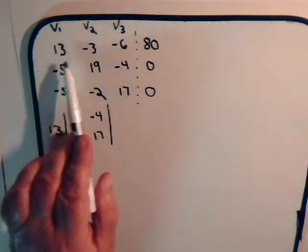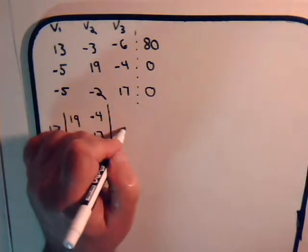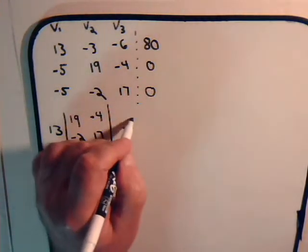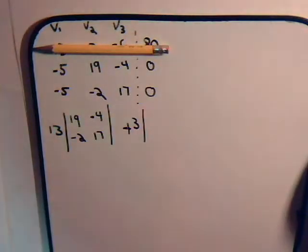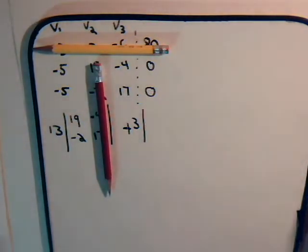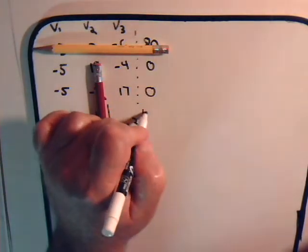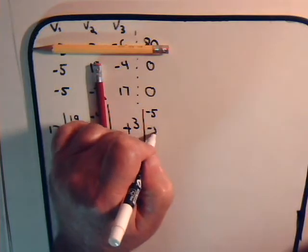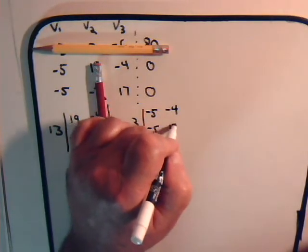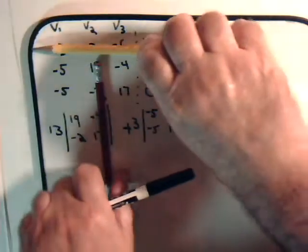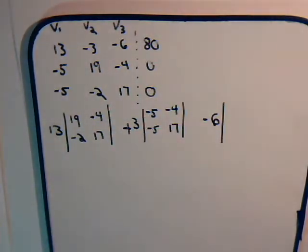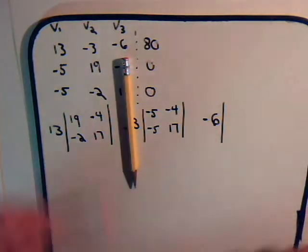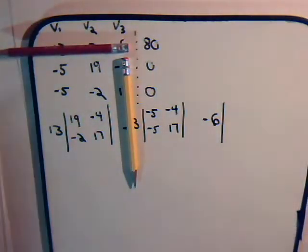Then we go across the top row, and the next number is minus negative three, so that's plus three times this sub-determinant. Cover up the row and column, and we have negative five, negative five, negative four, seventeen. Then moving across, we have minus six times this two by two determinant, covering up the column and row — again, two negative fives, nineteen and negative two.